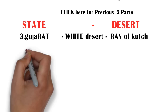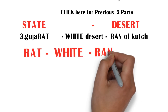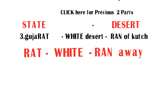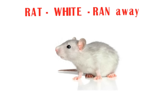To remember Gujarat, Rann of Kutch, and White Desert together: notice the letters R-A-T inside the word 'Gujarat' — so remember Gujarat as RAT. For White Desert, remember the word WHITE. For Rann of Kutch, remember the three-letter word R-A-N, pronounced 'ran'. Now frame these three words into a sentence: 'A rat which is in white color ran away.'